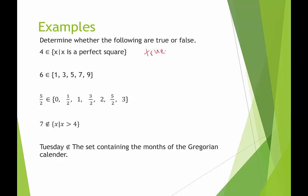Okay, so the second one says 6 is an element of the set containing 1, 3, 5, 7, 9. And this would be false, because it lists all of the elements in the set, and I don't see 6 here in this set.